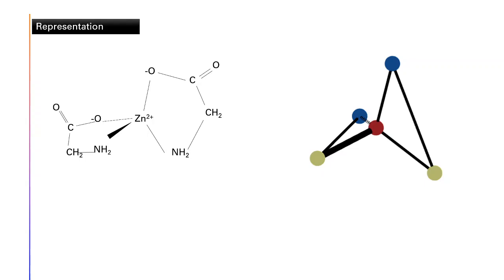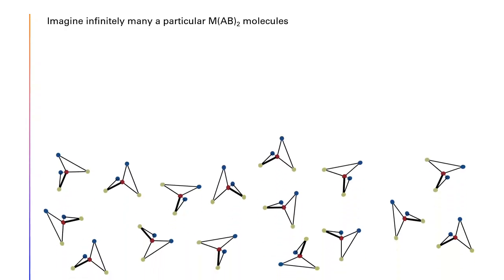The intuition, if you know about chiral carbon, says that if there are four different attachments to a carbon atom, you can have two configurations R and S. But here we don't have a carbon — we have Zn²⁺ — and the four groups are not all different. So the intuition suggests there would be no optical isomers or stereoisomers. But let's verify. Imagine infinitely many such molecules and try to superimpose them — that's how you figure out how many distinct molecules are possible.